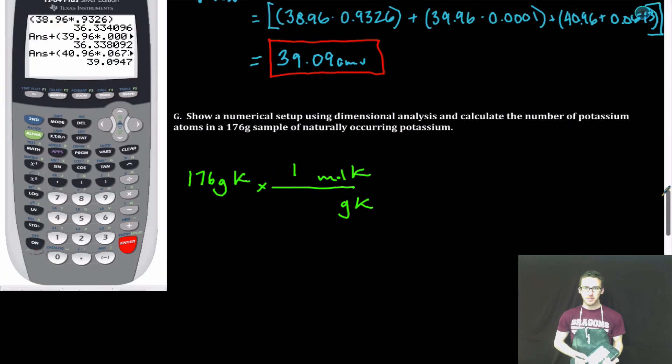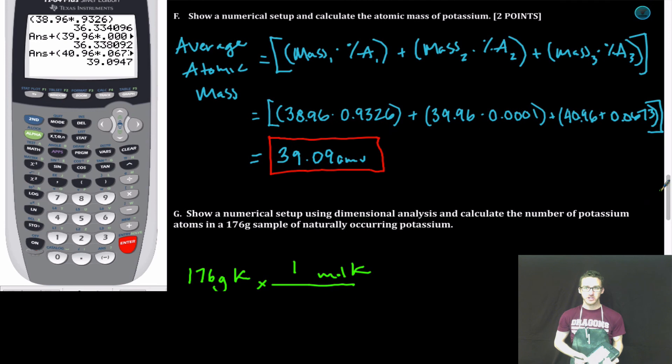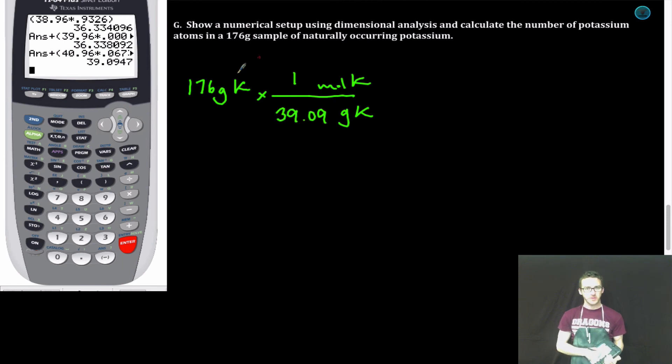However, keep in mind that we just solved for the average atomic mass, which is numerically equal to the molar mass in part F. So I'm just going to substitute that in. If I stopped right here, my units of grams would cancel out and I'd be left with moles. Before I continue, I always like to think to myself, do I have more than, less than, or exactly one mole? Well, if one mole is 39 or roughly 40 grams and I have 176 grams, I have way more than one mole of potassium.